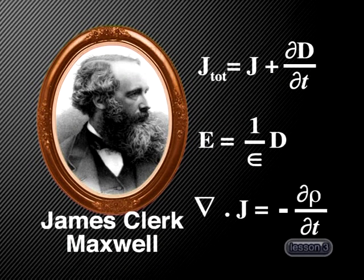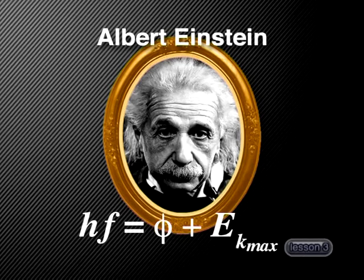Then Maxwell introduced his model based on a set of quite complex mathematical equations, suggesting that light indeed travels as waves. It seemed that finally the debate about the nature of light as a wave was settled, until along came a young German physicist, Albert Einstein. He wrote a theoretical paper explaining why light and all electromagnetic radiation must be considered as a stream of particles.